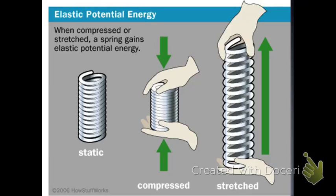So up until this point, we have had two categories of energy, and that's still going to be true. Two categories of energy: kinetic energy. Kinetic energy is the energy of objects that are moving, because 'kine' means motion. So kinetic energy means objects that are in motion, and that equation has velocity in it.